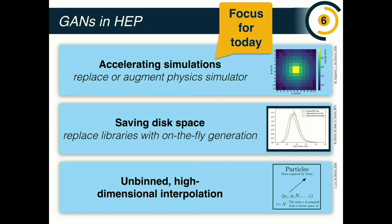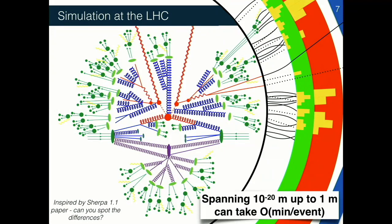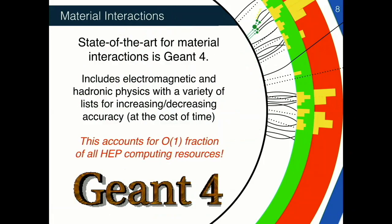Here's a schematic picture of a collision at the Large Hadron Collider in all its glory — definitely not to scale, as this picture spans over 20 orders of magnitude in distances. The smallest distance scales where the constituents of protons collide are at 10 to the minus 20 meters, and they fly out spanning many orders of magnitude until they hit our detectors, which are macroscopic objects on the scale of meters. This whole procedure can be very slow — it can take minutes to simulate one event, and this is a challenge when you want to simulate billions or trillions of events.